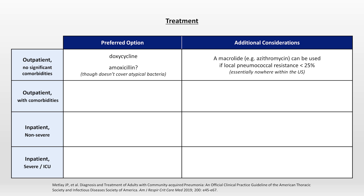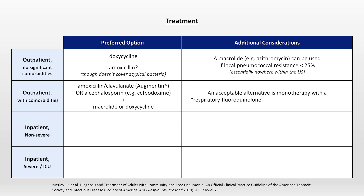The next category is outpatient with comorbidities. These comorbidities include heart failure, chronic lung disease, cirrhosis, CKD, alcohol dependence, active malignancy, asplenia, and diabetes. Preferred treatment options here are the combination of either amoxicillin-clavulanate, also known as augmentin, or a cephalosporin such as cefpodoxime, with either a macrolide or doxycycline. An acceptable alternative is monotherapy with a so-called respiratory fluoroquinolone, which includes levofloxacin and moxifloxacin, but not ciprofloxacin.